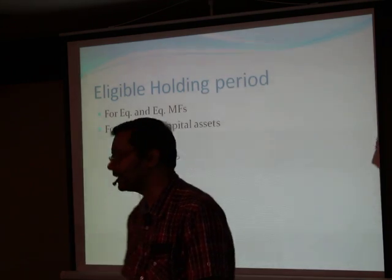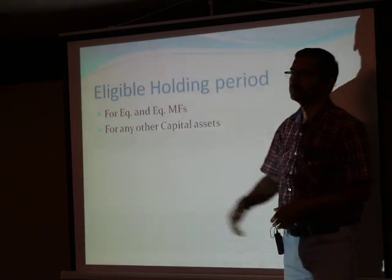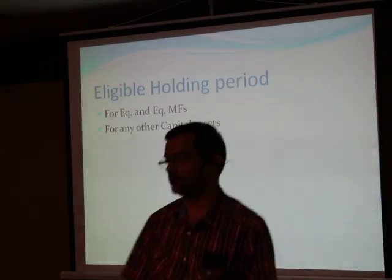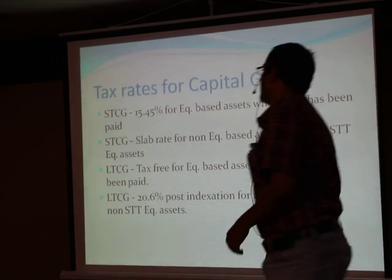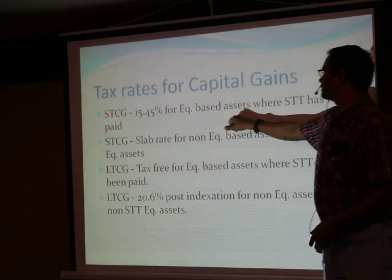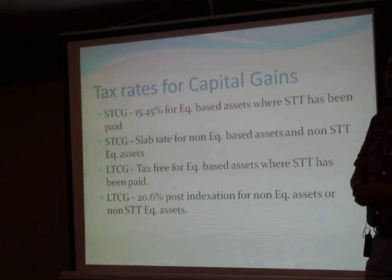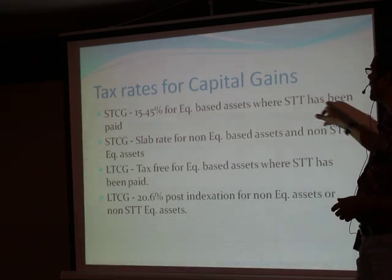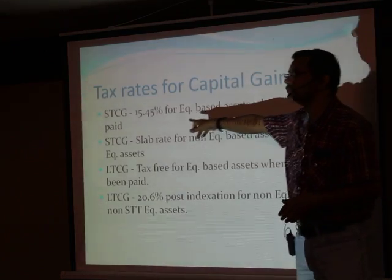Eligible holding period. In case of equity and equity-based mutual funds, the holding period is different. And for any other capital asset, the holding period is different. If your equity-based assets — that is your equity mutual funds as well as equity stocks, your direct company stocks, traded in exchange where STT has been paid — the short-term capital gain tax rate is 15.45%.